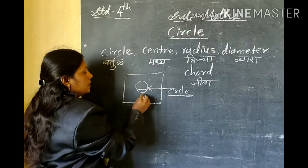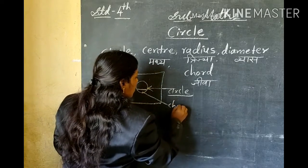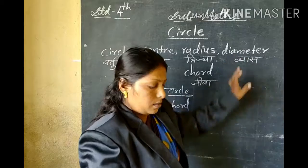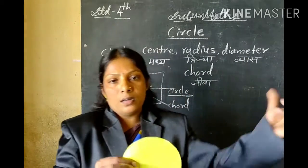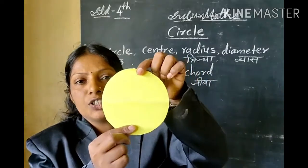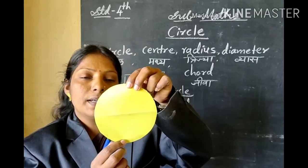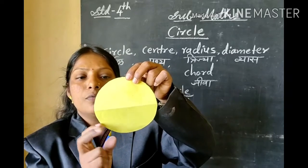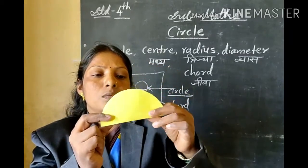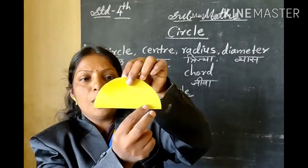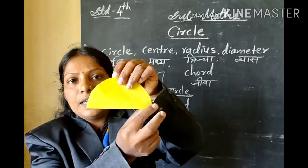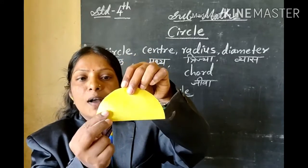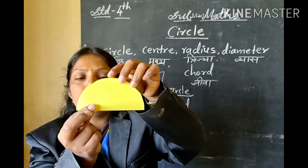This is the cord. The next part is diameter. Take one of these circular shapes, then fold the circle in two halves. Fold this paper, fold this circle into two equal halves.